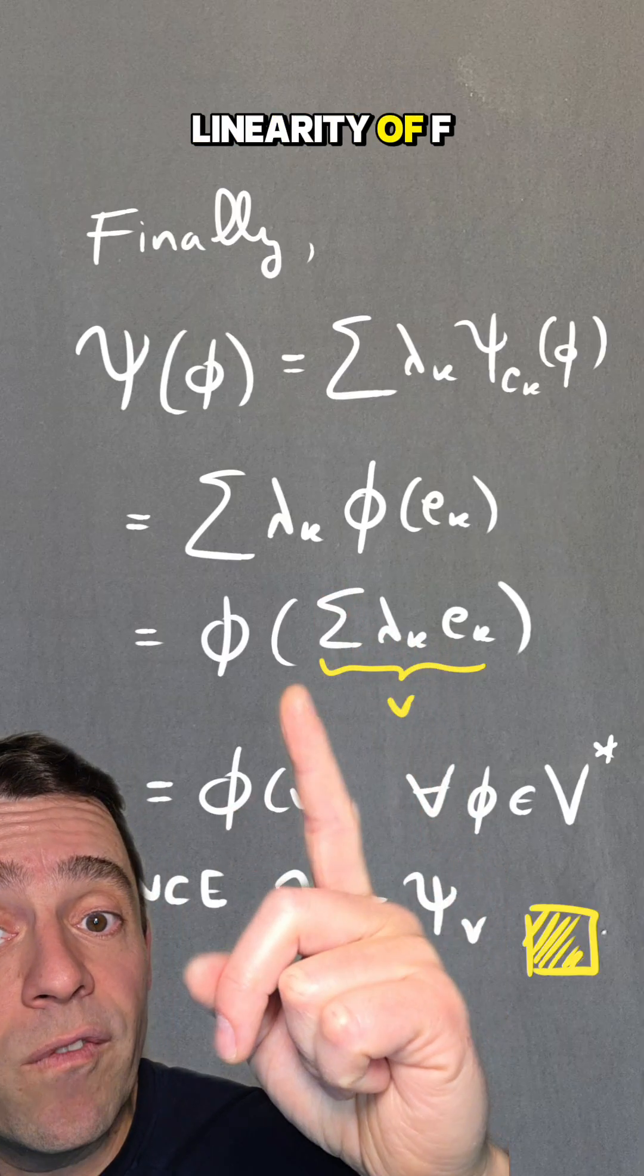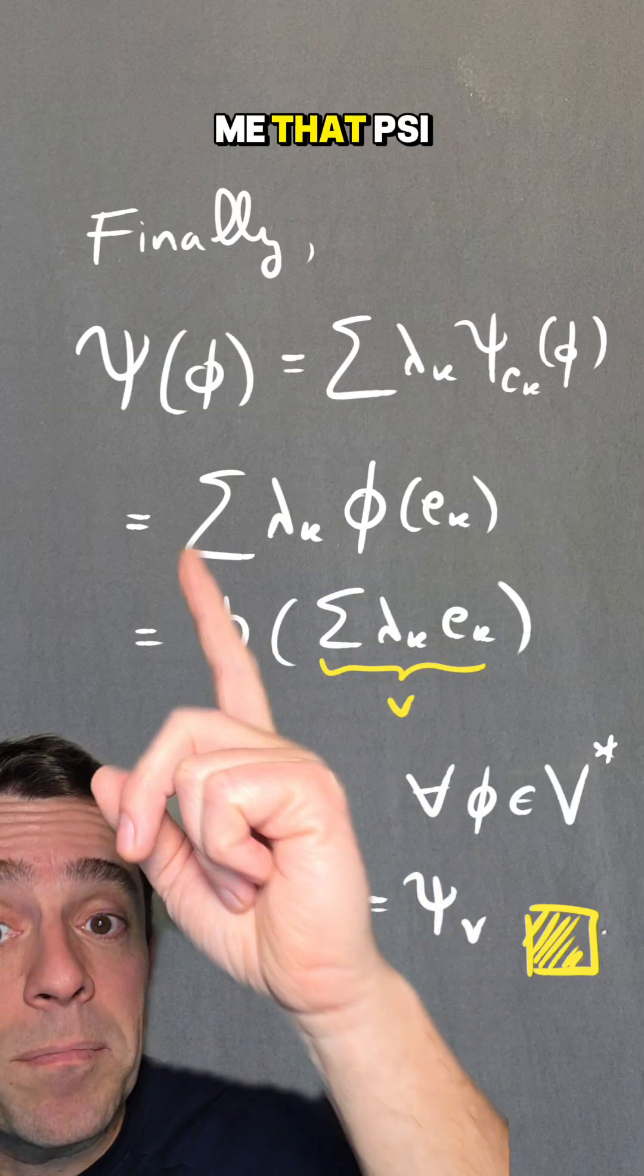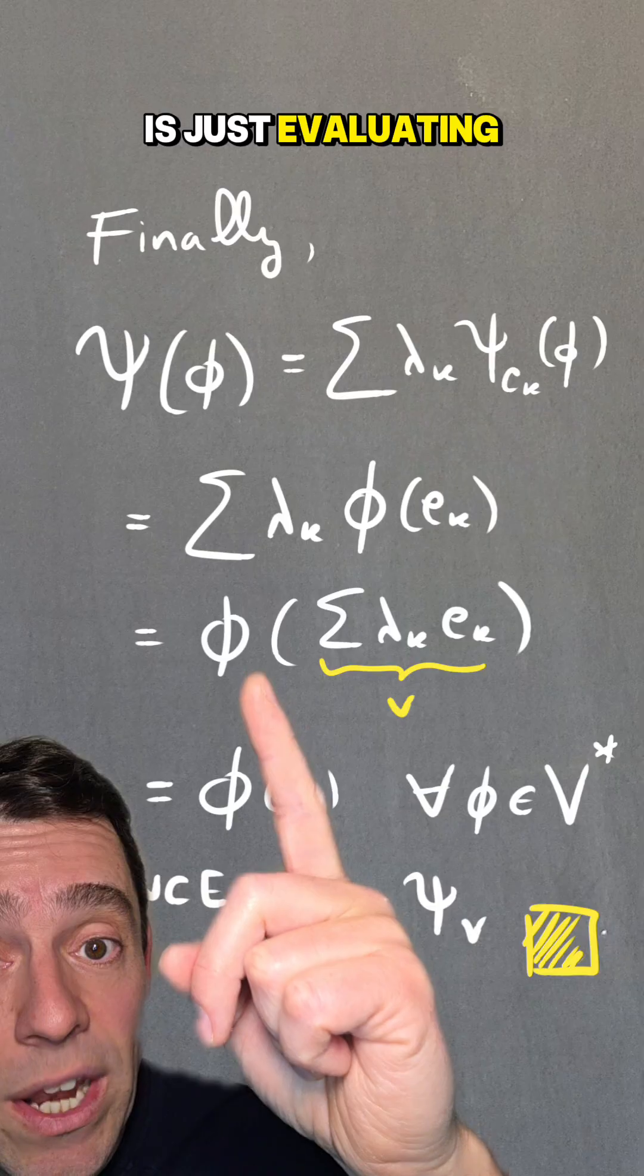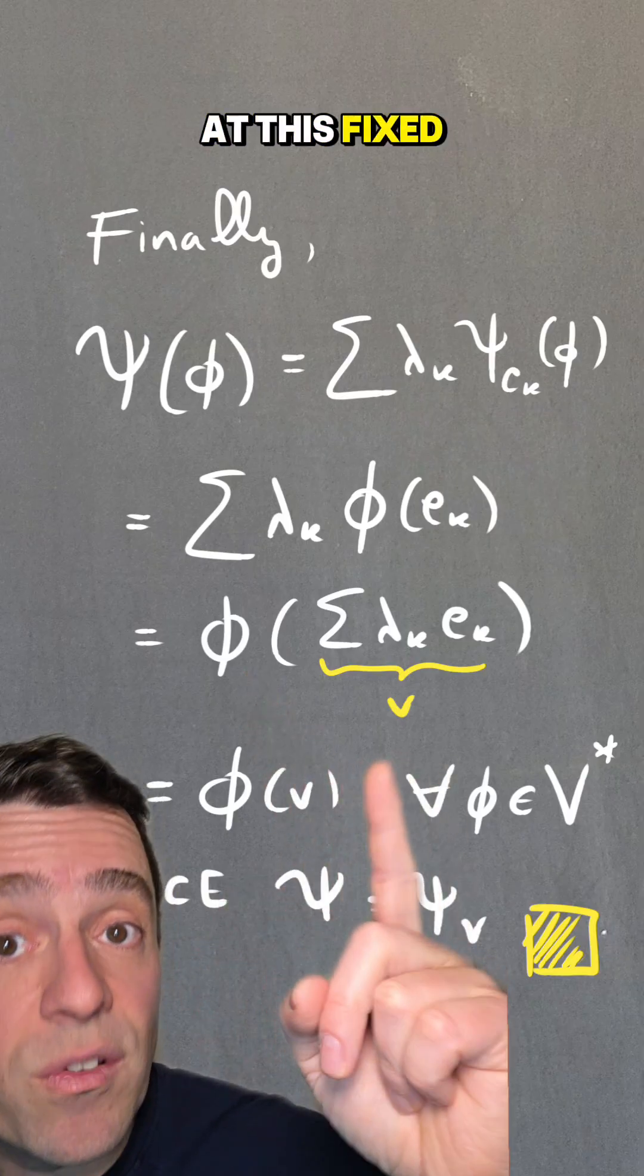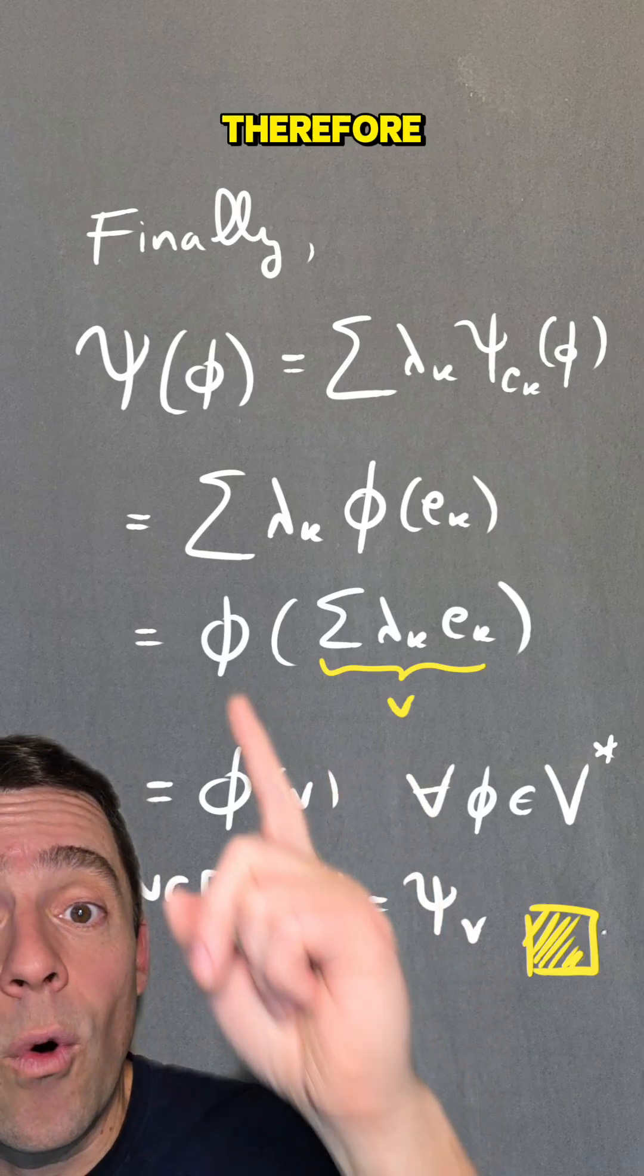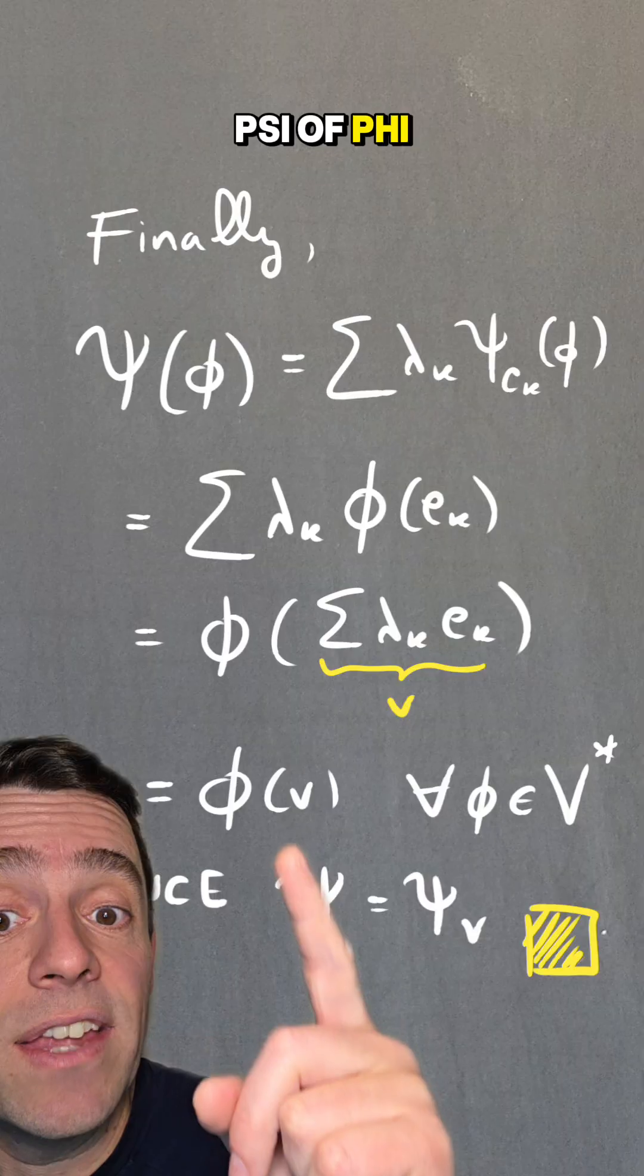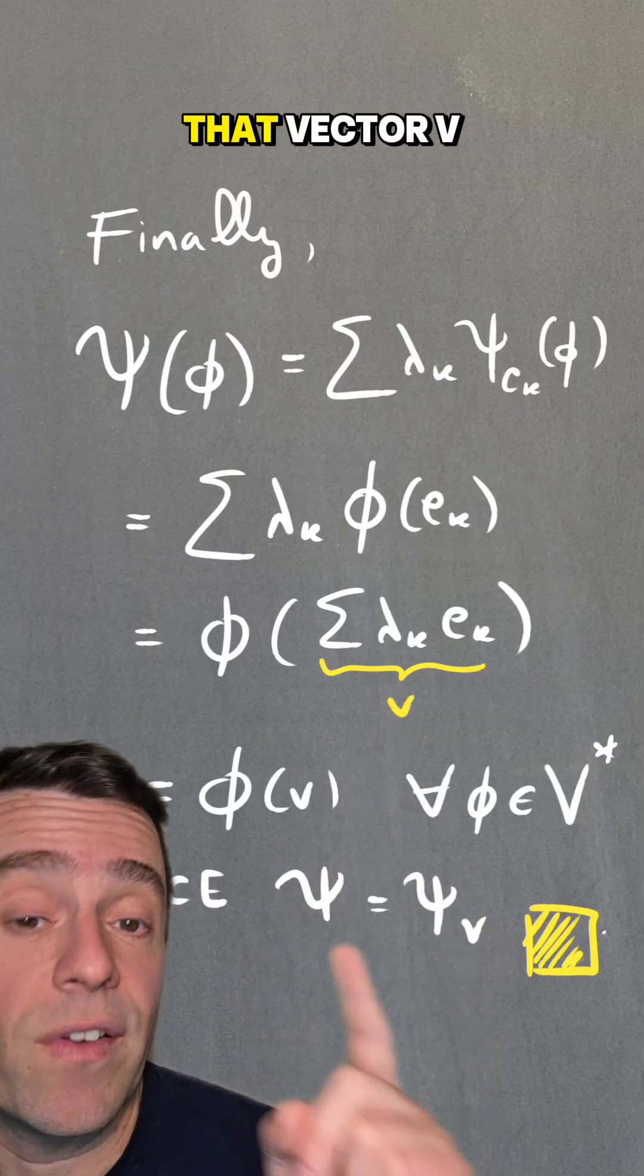Now, I use the linearity of φ, and that tells me that ψ is just evaluating φ at this fixed vector V. And therefore, ψ of φ is just φ of V for that vector V.